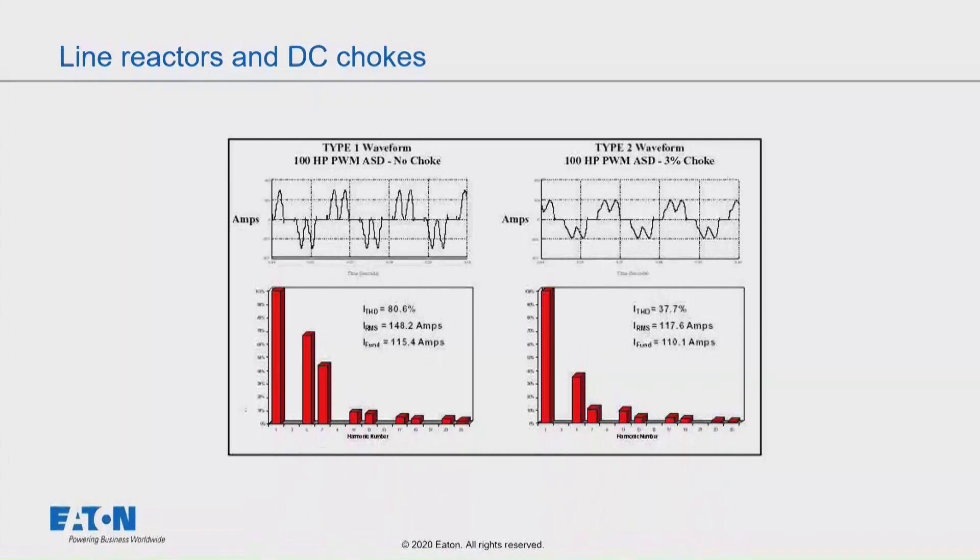Now if we take a look at this graphic, this graphic shows about 80% distortion for a drive that has no line reactor in front of it. In fact, every drive has about a half a percent built into it inherently in the conductors. But if we purposely put a 3% reactor or choke, we get a reduction of about half. We get down to about 40% distortion.